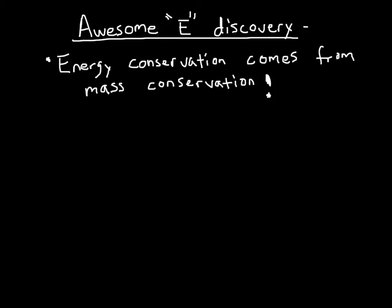One of the most amazing discoveries in physics happened in the early 1900s with that awesome energy discovery. That discovery meant that energy conservation actually comes straight out of mass conservation through the following formula developed by Einstein: E equals mc squared. Energy is equal to mass times the speed of light squared.